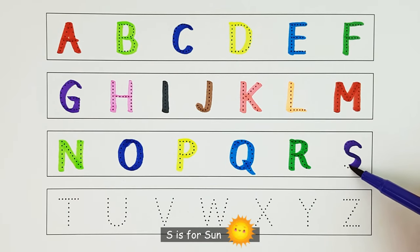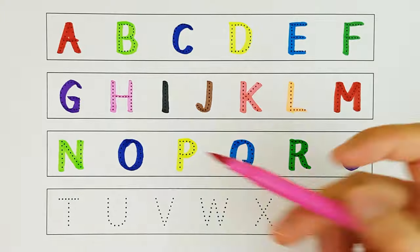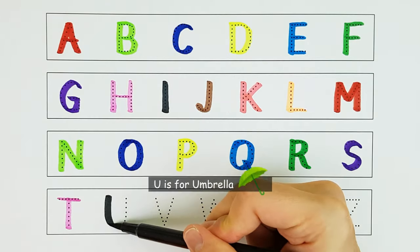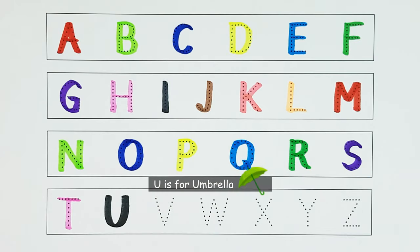S. S is for Sun. S. T. T is for Tomato. T. U. U is for Umbrella. U.